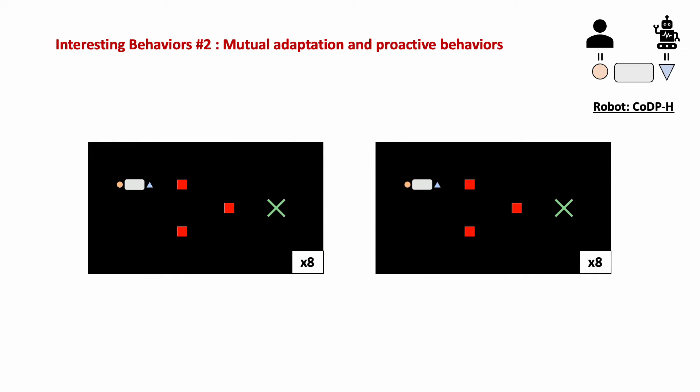In the second example, we see mutual adaptation and proactivity by examining two separate rollouts with the same initial configuration. In this first rollout, both agents initially decide on different strategies but adapt to the outcome. In the second rollout, the robot takes leadership when the human does nothing initially.